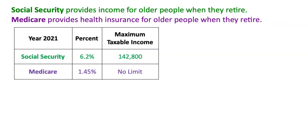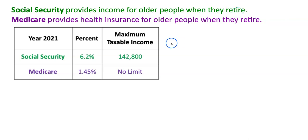In this video I am going to go over Social Security and Medicare. Social Security provides income for older people when they retire, and the earliest you can take out Social Security is at the age of 62.